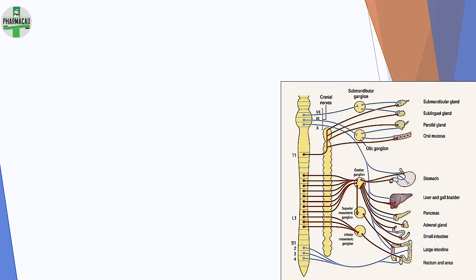Now let's talk about the structure of sympathetic. It is thoracolumbar, so T1 indicates thoracic vertebrae and thus thoracic outflow, and L1 indicates lumbar outflow. There is an extra characteristic visible in the diagram — a ganglion. A ganglion is a group and collection of nerve cell bodies that come together.